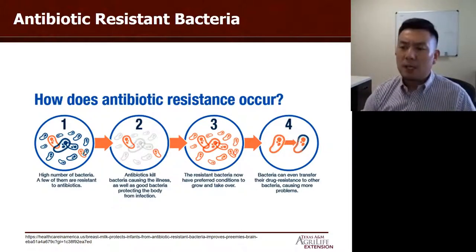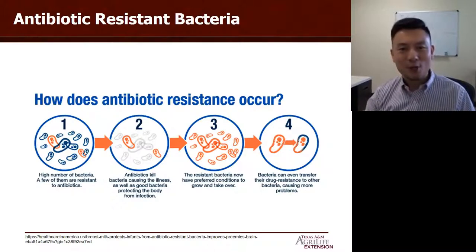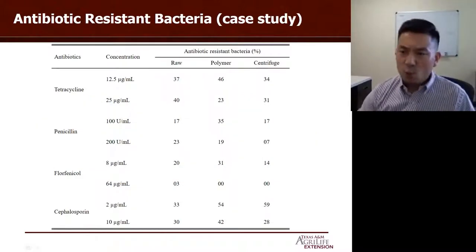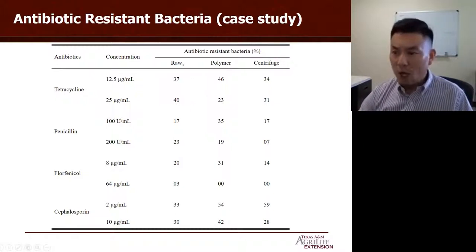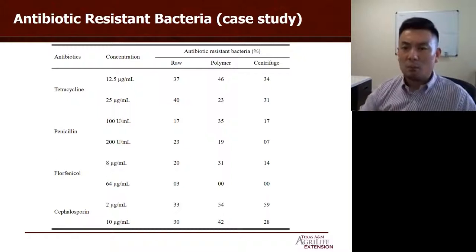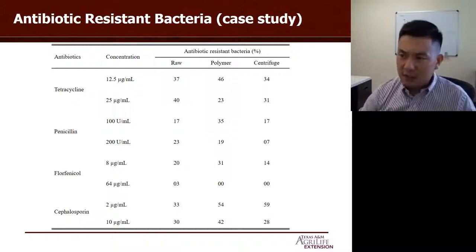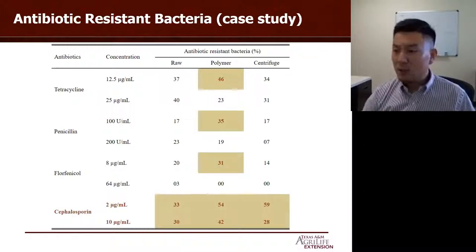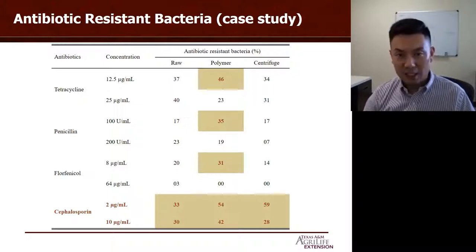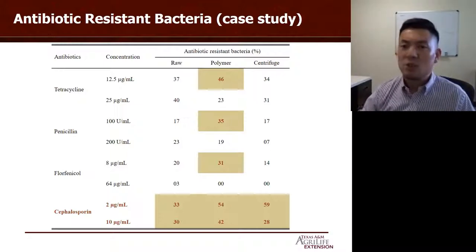Next I'll briefly talk about antibiotic-resistant bacteria in manure — I won't go too much into this, as our next two presenters will cover it in more detail. In one experiment, we picked four commonly used antibiotics in dairy cows and applied three treatments: raw manure, polymer treatment, and centrifuge treatment. Overall, those treatments reduced solids, nutrients, and overall bacteria concentration. However, when we look at the percentage of antibiotic-resistant bacteria remaining in the liquid phase, some treatments actually increased that percentage. This gives us important awareness for planning future work.